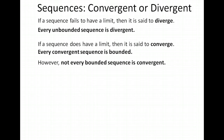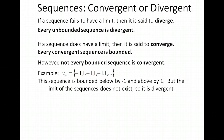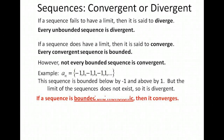Let's look at an example of that. If we have the sequence negative 1, 1, negative 1, 1, and so on, it is bounded below by negative 1 and above by 1, but the limit does not exist, so that means this one is divergent. We need more than boundedness to decide whether something is convergent. It must actually be both bounded and monotonic — then it will converge.